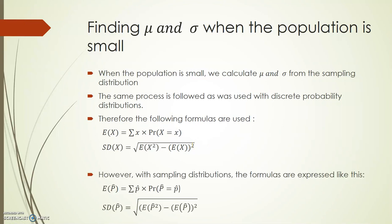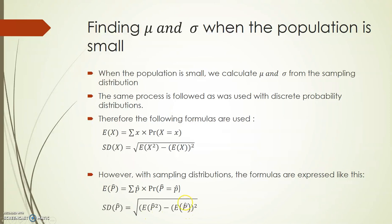The formulas for sampling distributions are very similar to those. There are a few differences, but they're expressed in terms of p-hat. The expected value of p-hat is equal to each value of p-hat multiplied by its associated probability, and then we add all our answers together. The standard deviation of p-hat is equal to the square root of the expected value of p-hat squared minus the expected value of p-hat, the whole thing squared.